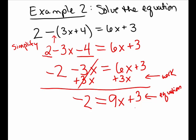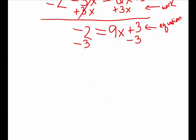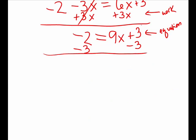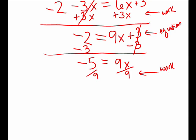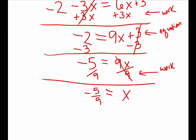I have x's on the right and I want to bring all my numbers to the left. I'm going to subtract 3 on both sides to clear away the 3 and rewrite my entire equation. 3 take away 3 cancels, leaving 9x on the right. And on the left, I started with negative 2 and then I subtracted 3, leaving negative 5. To isolate x, 9 is multiplied to the x, so I divide both sides by 9. 9 over 9 cancels, leaving x, and on the left I have negative 5/9. So x is negative 5/9.